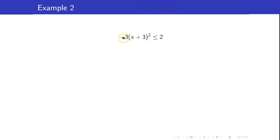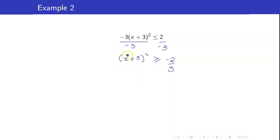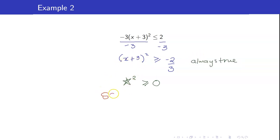For our next example, we have negative 3 times (x plus 3) squared less than or equal to 2. I want the coefficient of x squared to be positive, so I will divide both sides by negative 3. Since I divided by a negative number, the inequality sign flips. However, the square of any number is always greater than or equal to zero, so this inequality is always true. Equivalently, the solution set is the set of all real numbers — you can plug in any value for x.